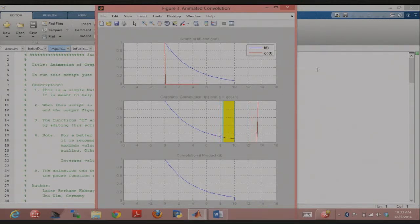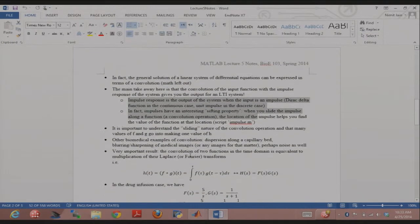The only thing that gets multiplied is where that impulse is. Everything else is zero. There's only one value that exists and that value is active only at the point where the impulse is currently standing. The output is just the value of the function at that point. That's called the sifting property. It's a very important property.